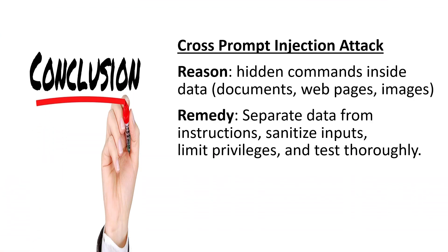To summarize: a cross prompt injection attack happens when hidden commands inside data — for example, documents, web pages, or images — slip into an LLM's context and cause the model to follow malicious instructions. We can defend against it by separating data from instructions, sanitizing inputs, limiting privileges, and testing thoroughly.